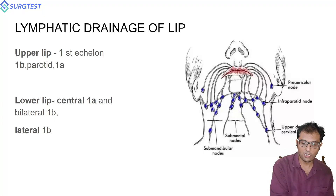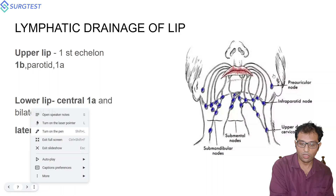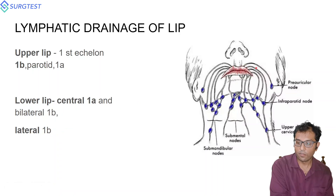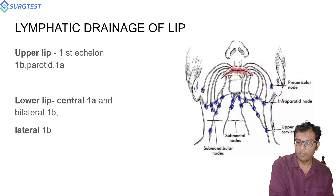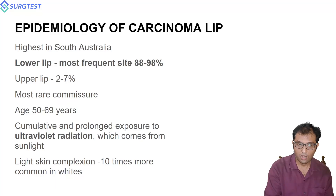Now, the lymphatic drainage of the lip: the first echelon lymph nodes for the upper lip are the 1B nodes — the submandibular gland nodes. Upper lip lymphatics can also go to the parotid area, and from 1B can go to 1A. The lower lip lymphatics are divided into two parts: central and lateral. Central lower lip lymphatics drain to 1A, whereas the lateral lower lip primary echelon drains to 1B.